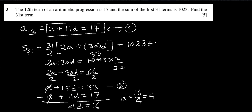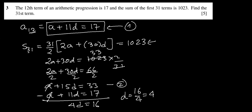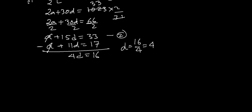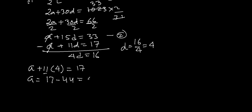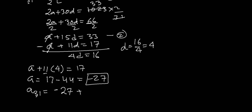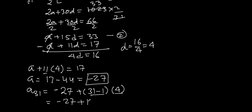The question asks us to find the 31st term. Now that we know d equals 4, we substitute back into equation 1: a plus 11 times 4 equals 17, so a equals 17 minus 44 equals minus 27. The 31st term is a plus 30d equals minus 27 plus 30 times 4 equals minus 27 plus 120 equals 93.